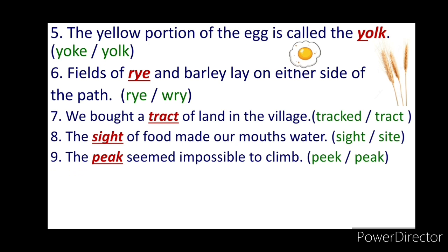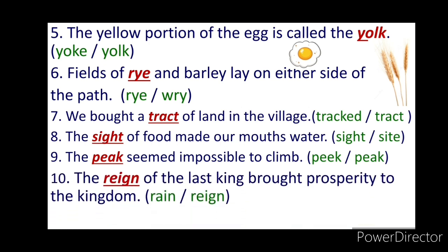Ninth: The peak seemed impossible to climb. P-E-E-K means to look in a cautious way, whereas P-E-A-K means the pointed top of a mountain. Thus, the answer will be P-E-A-K, peak. Tenth: The reign of the last king brought prosperity to the kingdom. R-E-I-G-N means the period during which a monarch is sovereign, whereas R-A-I-N means liquid water in the form of droplets condensed from atmospheric water vapour.